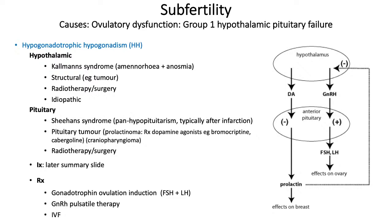All of these are likely to respond to gonadotrophin ovulation induction — giving FSH and LH — providing there isn't ovarian pathology as well. There's also GnRH pulsatile therapy, where GnRH is released in a pulsatile manner to emulate a natural GnRH pulse. This is thought to reduce multiple follicle recruitment, meaning less risk of multiple pregnancies and ovarian hyperstimulation syndrome. GnRH pulsatile therapy doesn't appear to be widespread on the NHS as it seems quite costly. As with most subfertility, IVF treatment is also an option.